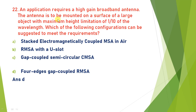An application requires a high gain broadband antenna mounted on a large surface with maximum height limitation of 1/10 of the wavelength. A four edge gap coupled RMSA satisfies these requirements. So the answer is D.